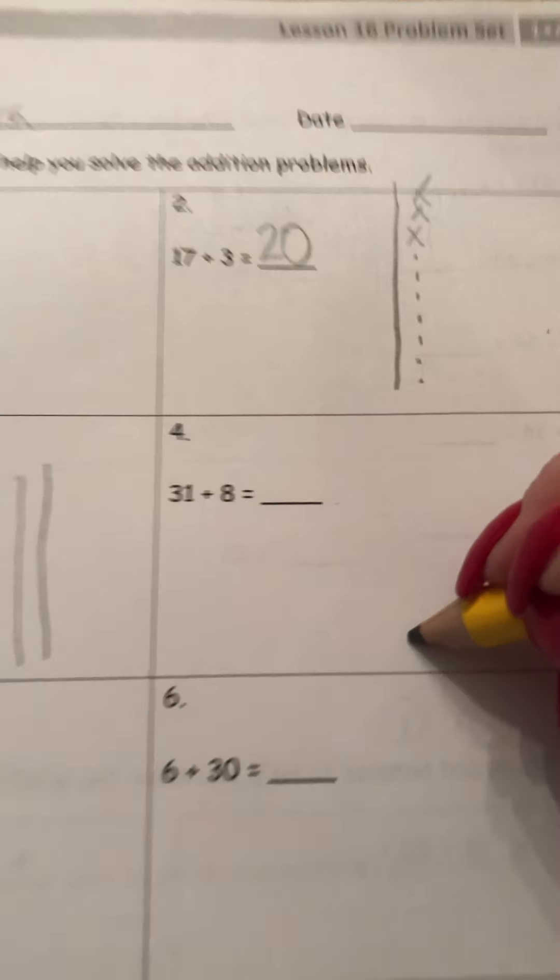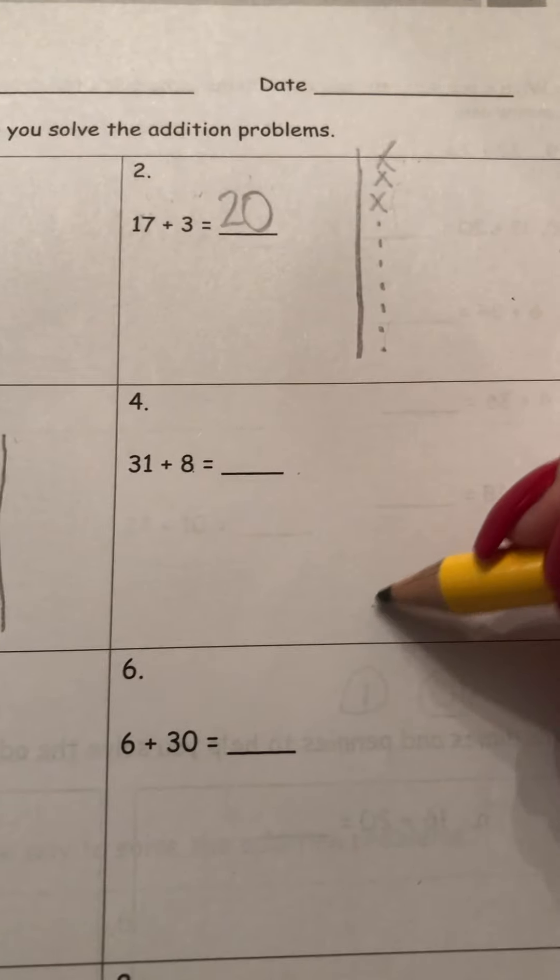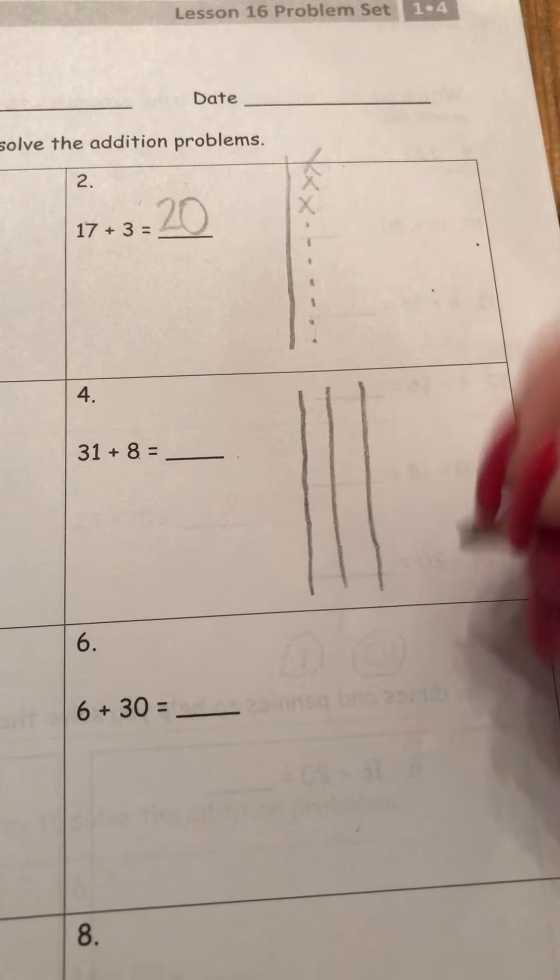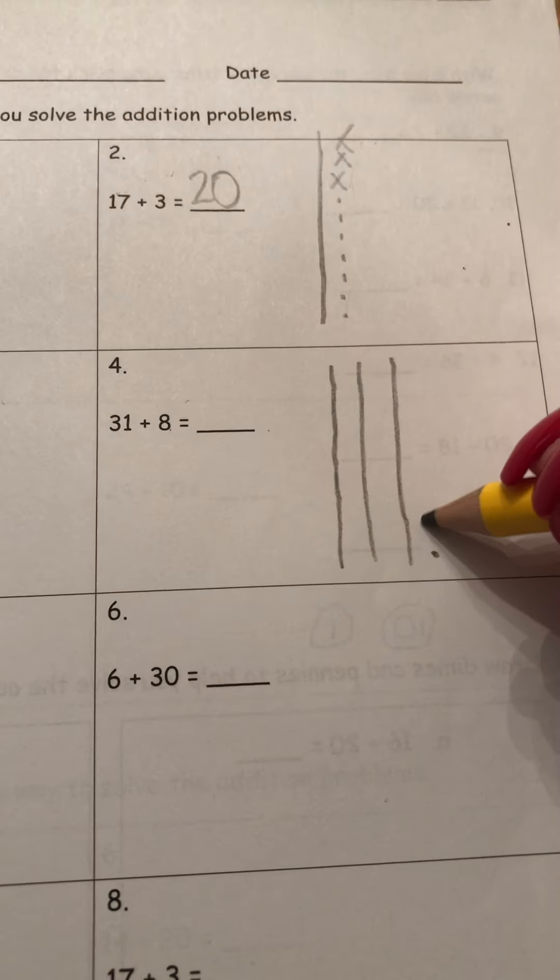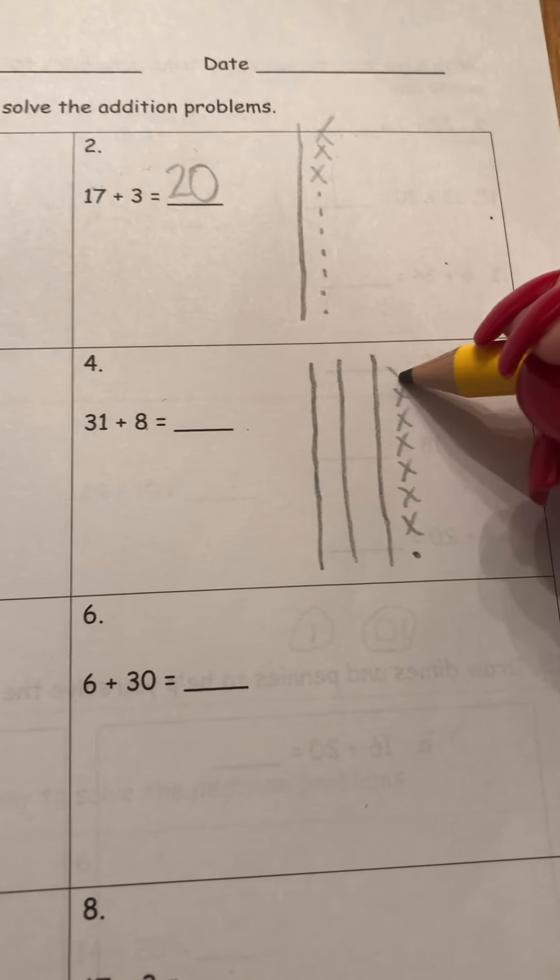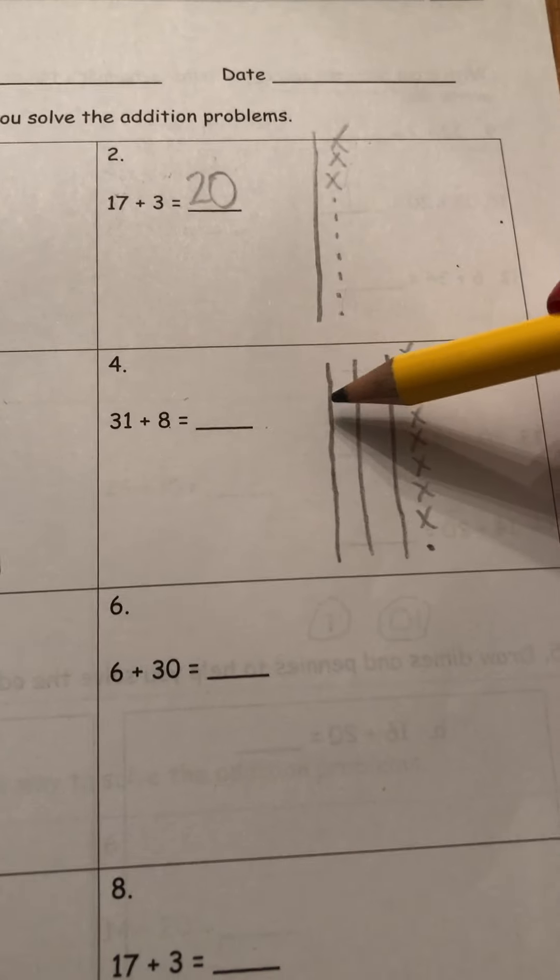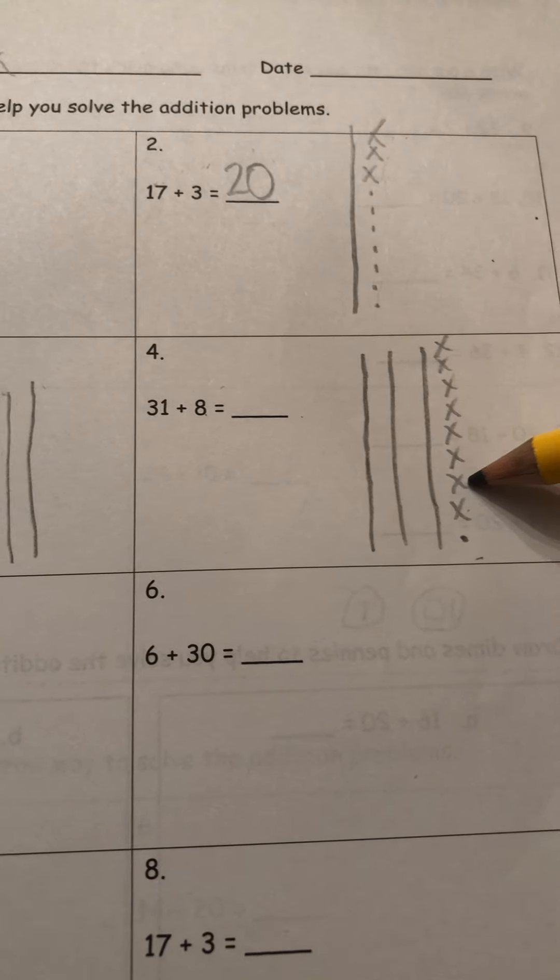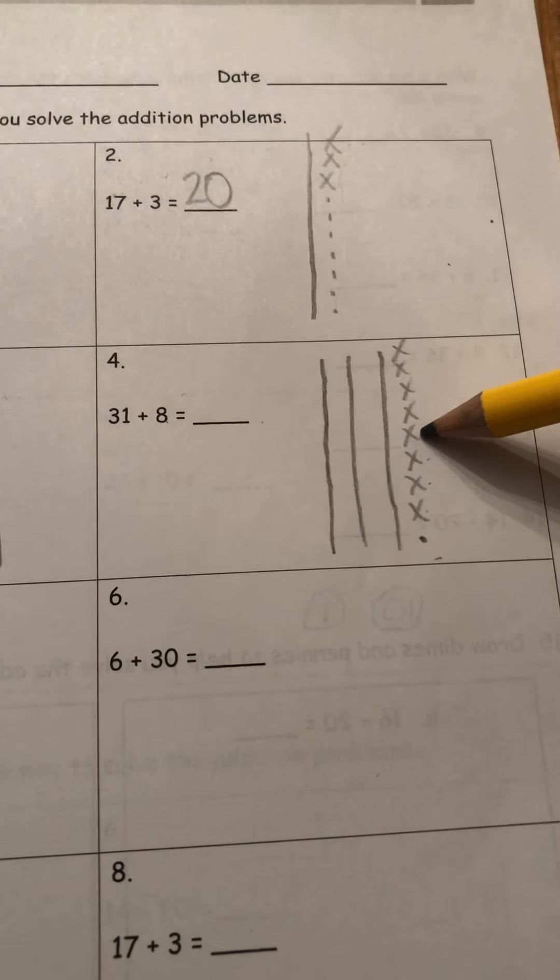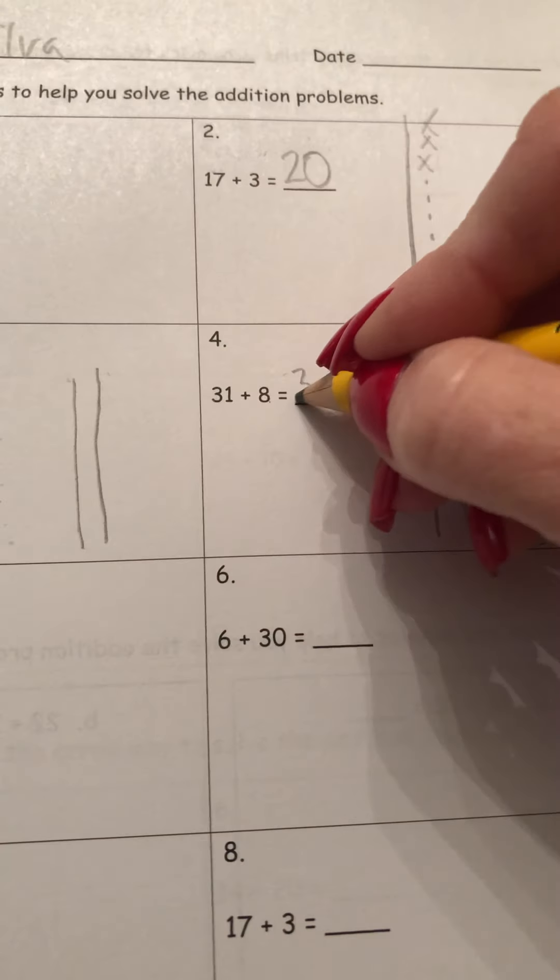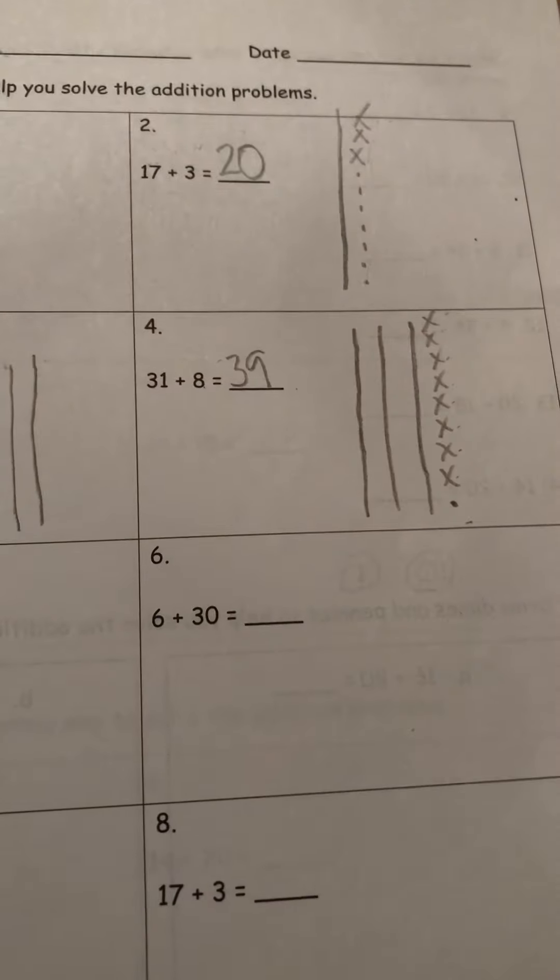Let's count, make our three quick tens. That's 10, 20, 31, and now our 8. 1, 2, 3, 4, 5, 6, 7, 8. So we have 31, 32, 33, 34, 35, 36, 37, 38, 39. 31 plus 8 equals 39.